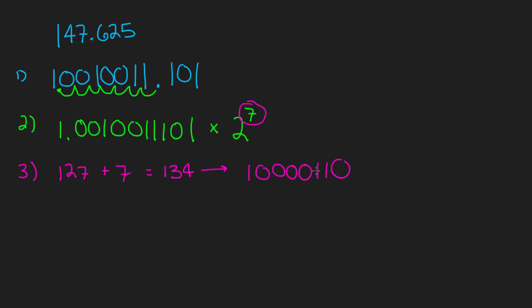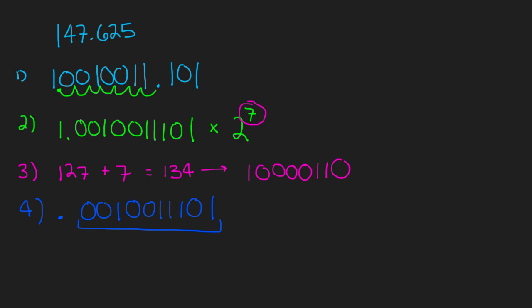Now we need to take care of the mantissa. You look at the normalized number and drop the leading one — that's the trick. Once you do that, you get the remaining bits: 00100111 101. This is what the mantissa is going to represent.